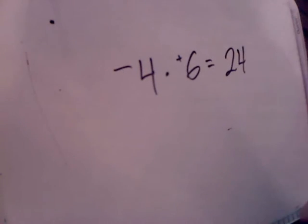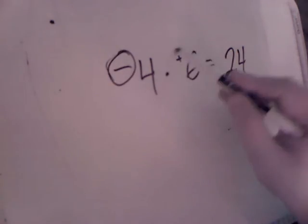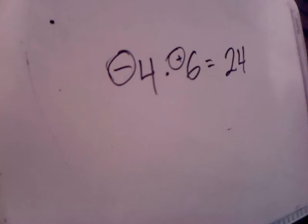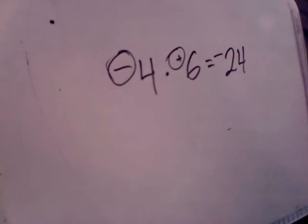Now we have to figure out what sign should this be. We only have one negative sign. And because we only have one negative sign, what's going to happen is that negative sign is going to go over to the 24. So our answer is going to be negative 24.